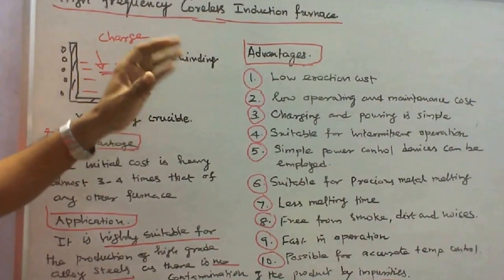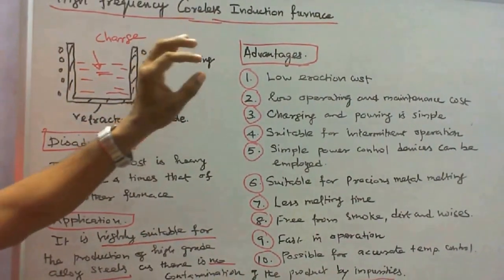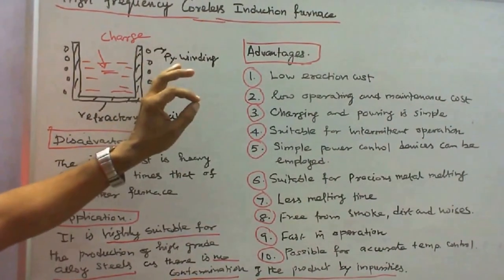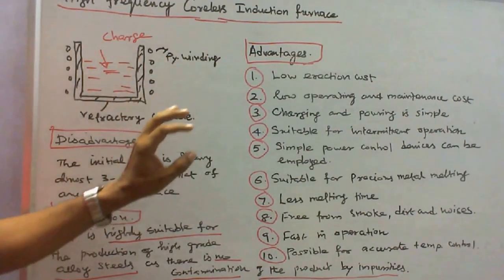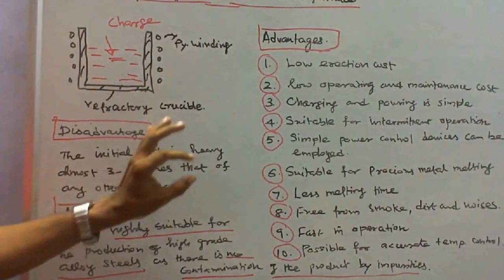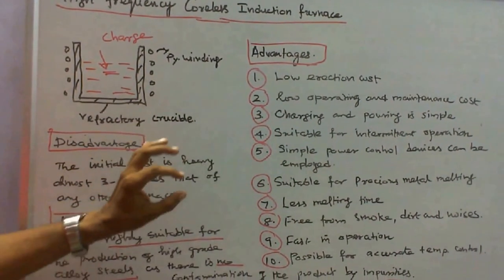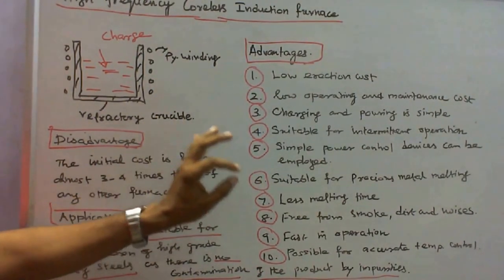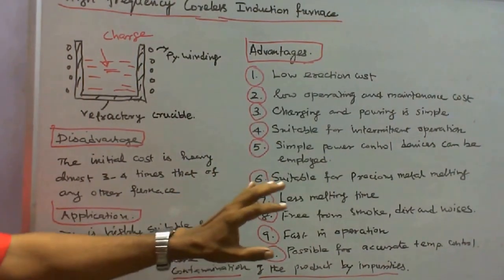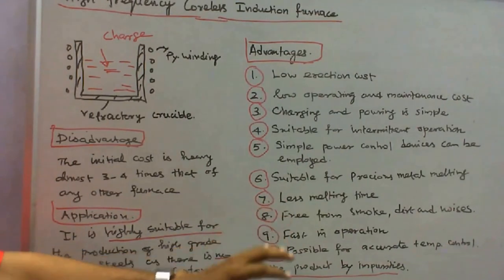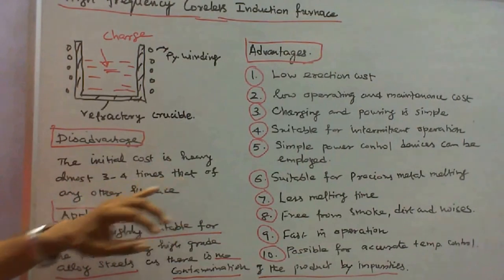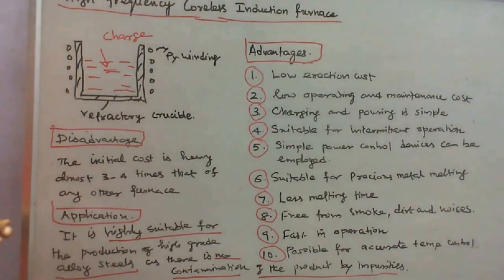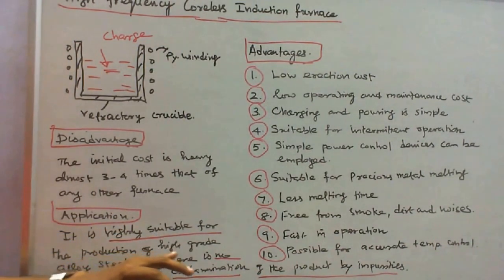The advantages of coreless induction furnaces are: 1. Low erection cost; 2. Low operating and maintenance cost; 3. Charging and pouring is simple; 4. Suitable for intermittent operation; 5. Simple power control devices can be employed; 6. Suitable for precise metal melting; 7. Less melting time; 8. Free from smoke, dirt and noise; 9. Fast in operation; 10. Possible for accurate temperature control. The disadvantage is that the initial cost is heavy — almost 3 to 4 times that of any other furnace. The application is that it is highly suitable for the production of high-grade alloy steel, as there is no contamination of the product by impurities.